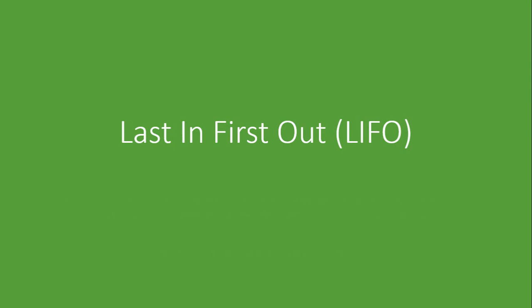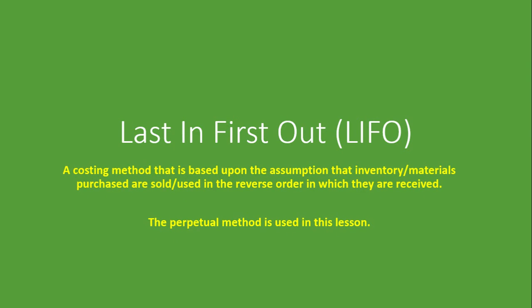Welcome to Countards. In this lesson we'll be looking at the last in first out method of inventory costing. It is a costing method based upon the assumption that inventory or materials purchased are sold or used in the reverse order in which they are received, meaning the last inventory received will be the first one sold or used. We're also going to use the perpetual method, which means we'll be updating our inventory continuously after every transaction.